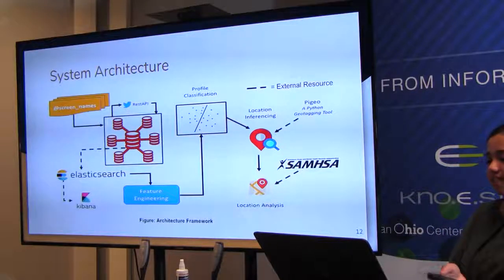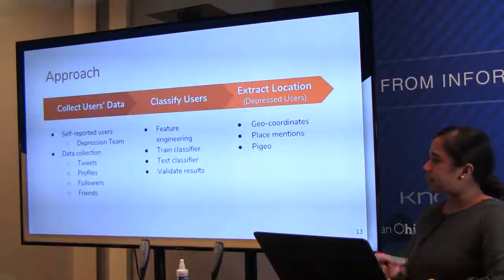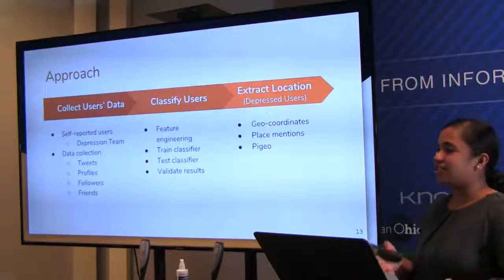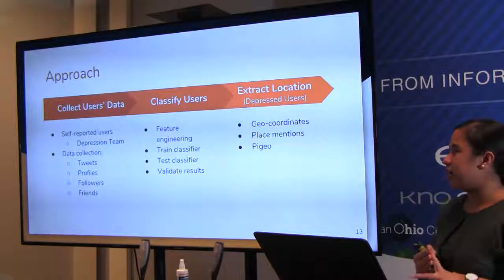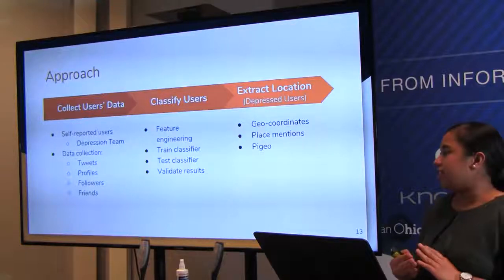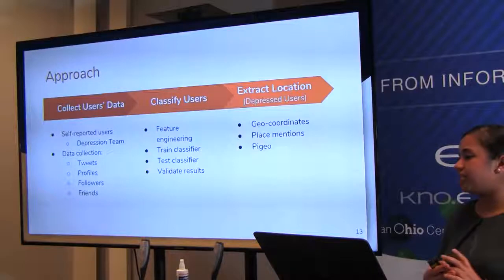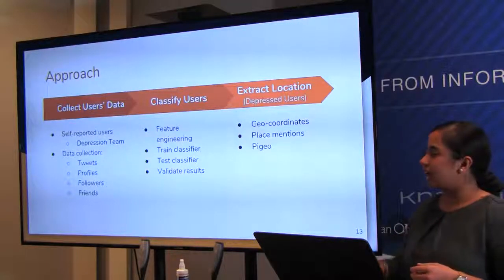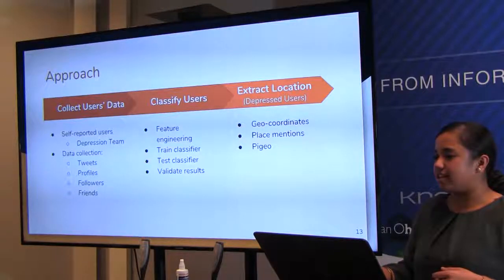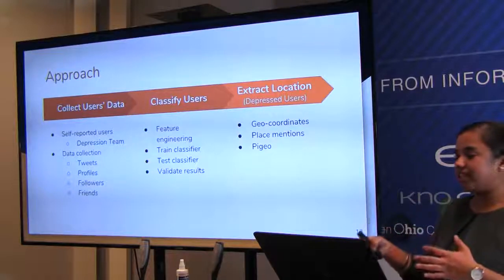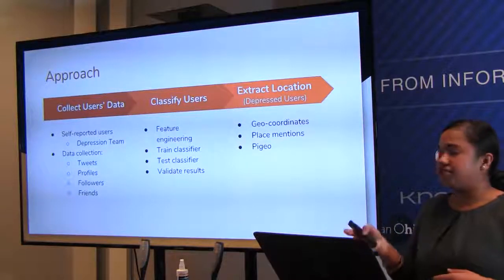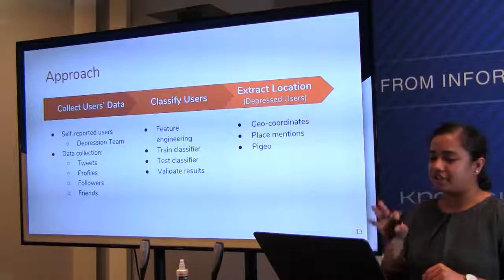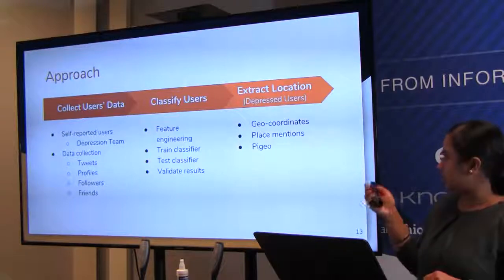Once we have depressed users, we move on to the location inferencing phase. For data collection, I collect each user's tweets, profile, followers, and friends. The followers and friends are used as unseen test data, which is different from previous approaches that modeled the network using friends and followers directly. The approach also involves feature engineering, training a classifier, testing, validating results, and then location extraction — using three techniques to be described later.